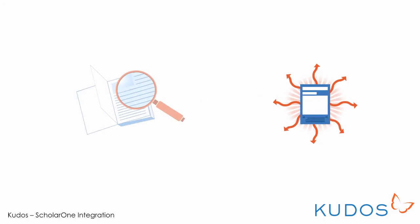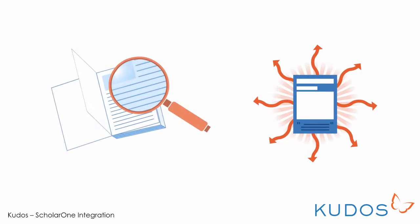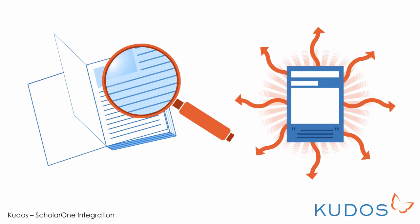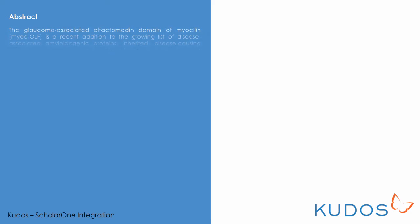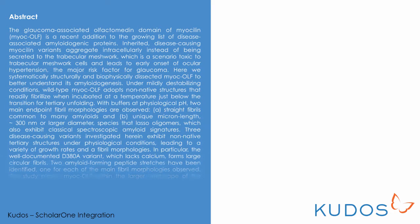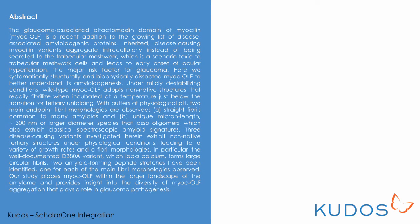At QDOS our aim is to make it easier, quicker and more intuitive for authors to increase the discoverability of their work. We know that abstracts often contain dense technical language, making it hard to get a quick overview of the article. Researchers are busy people, and are less likely to read a publication if they have to invest a lot of time first understanding whether or not it's relevant for them.